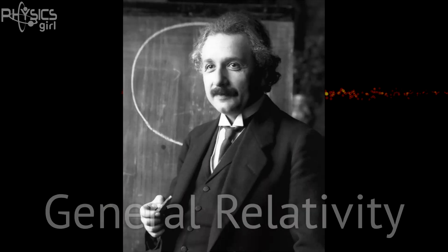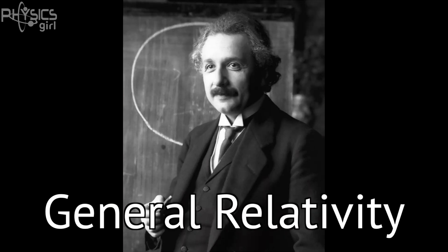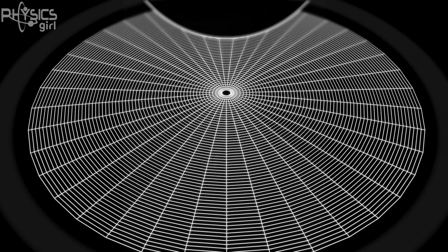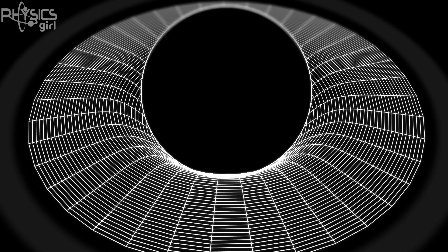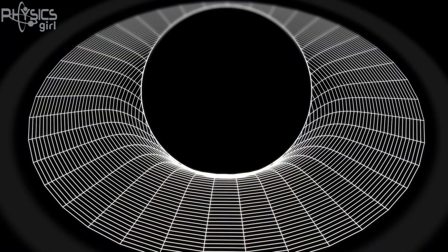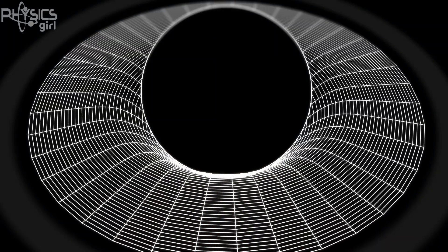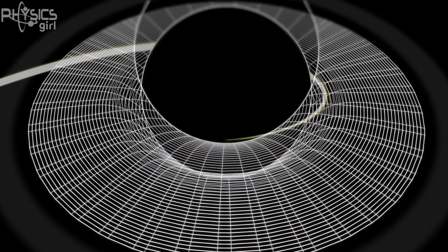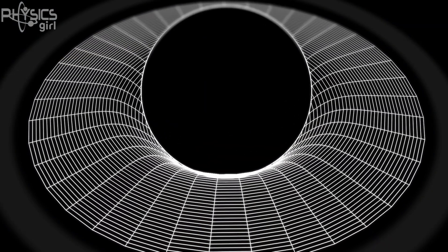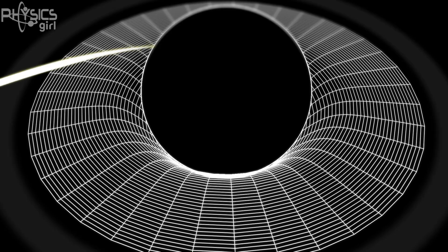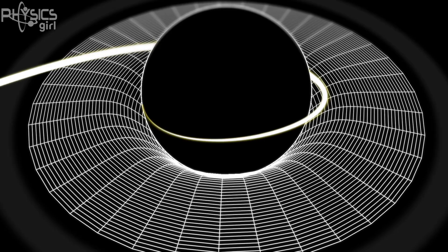But light always travels at the speed of light, so how could you possibly capture it? Einstein's theory of general relativity taught us that mass bends space itself, and that's what we perceive as gravity. So as light passes a huge object whose mass has warped spacetime, it travels in a curved path. Black holes warp spacetime so much that the light's path could never lead out of the black hole.